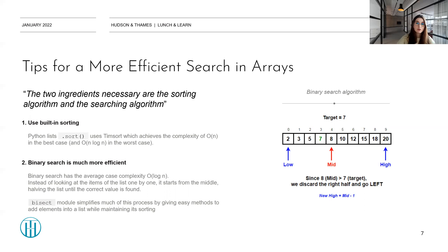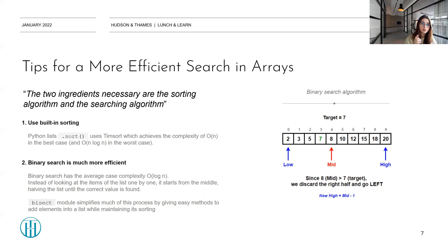You can see the brief description of the algorithm on the right-hand side in the picture. We have our target seven, and first we compare it with the middle value. As seven is smaller than our middle value, we only look at the lower part of the list between two and eight. Then we again find the middle point, five, and do it over and over again until we find our target at index position three or four. The inbuilt Python bisect module simplifies much of this process by providing easy methods to add elements to a list while maintaining its sorting, for example, the insort method.